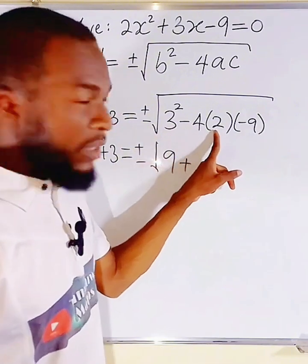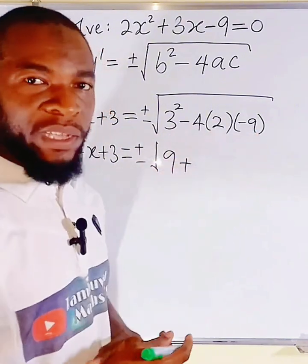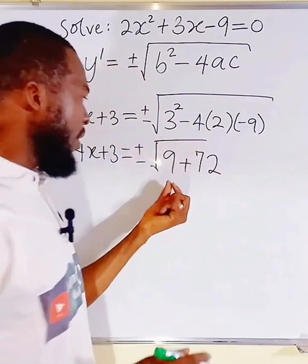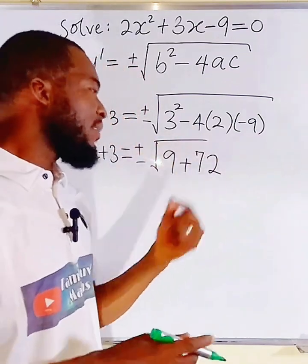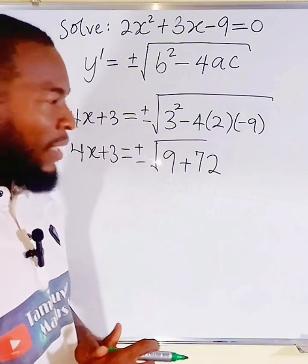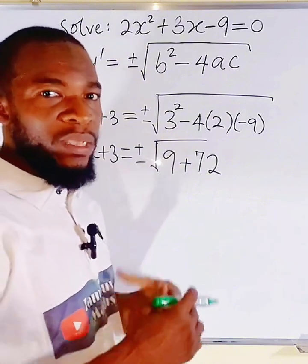4 times 2 is 8, and 8 times 9 is 72. So, we have 72 right here. And if you add 9 and 72, you are going to obtain 81.